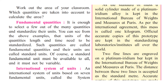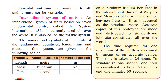Now let's understand fundamental quantities. It is enough to select a few out of the many quantities and standardize their units. Units of quantities like length and time need to be standardized — the same for everybody. Such quantities are called fundamental quantities, and their units are called standard units. A fundamental unit must be available to all and must not be variable — it should not change from person to person.